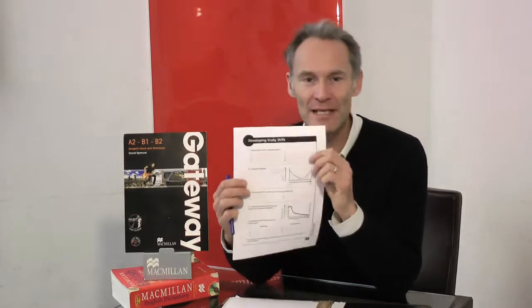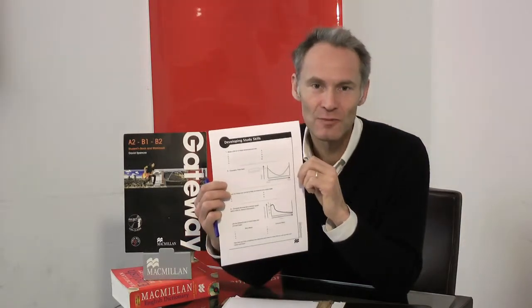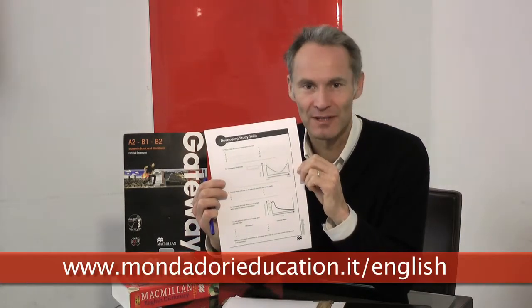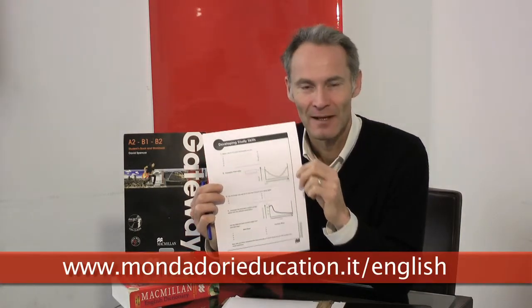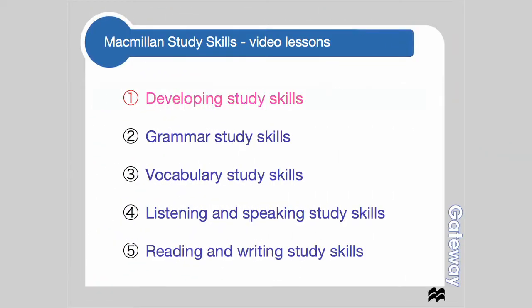There are five video lessons in this series and each video lesson has a PDF worksheet which you can download from the Mondadori website. The five video lessons are: developing study skills, grammar study skills, vocabulary study skills, listening and speaking study skills, and reading and writing study skills.